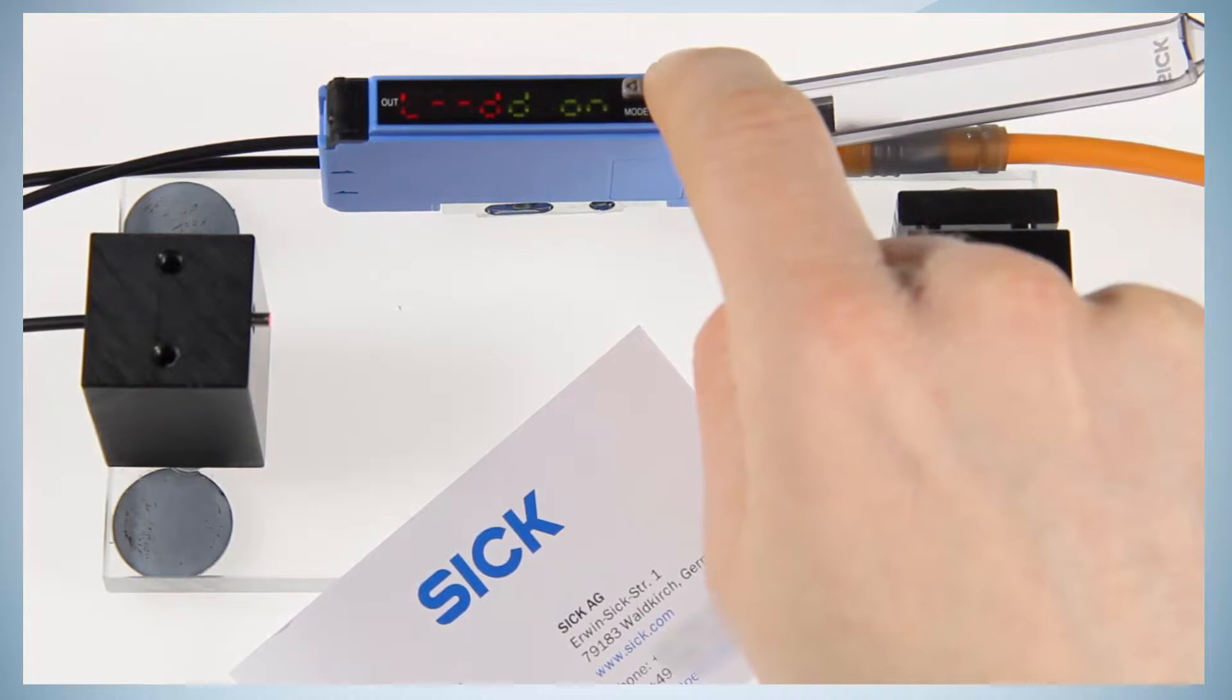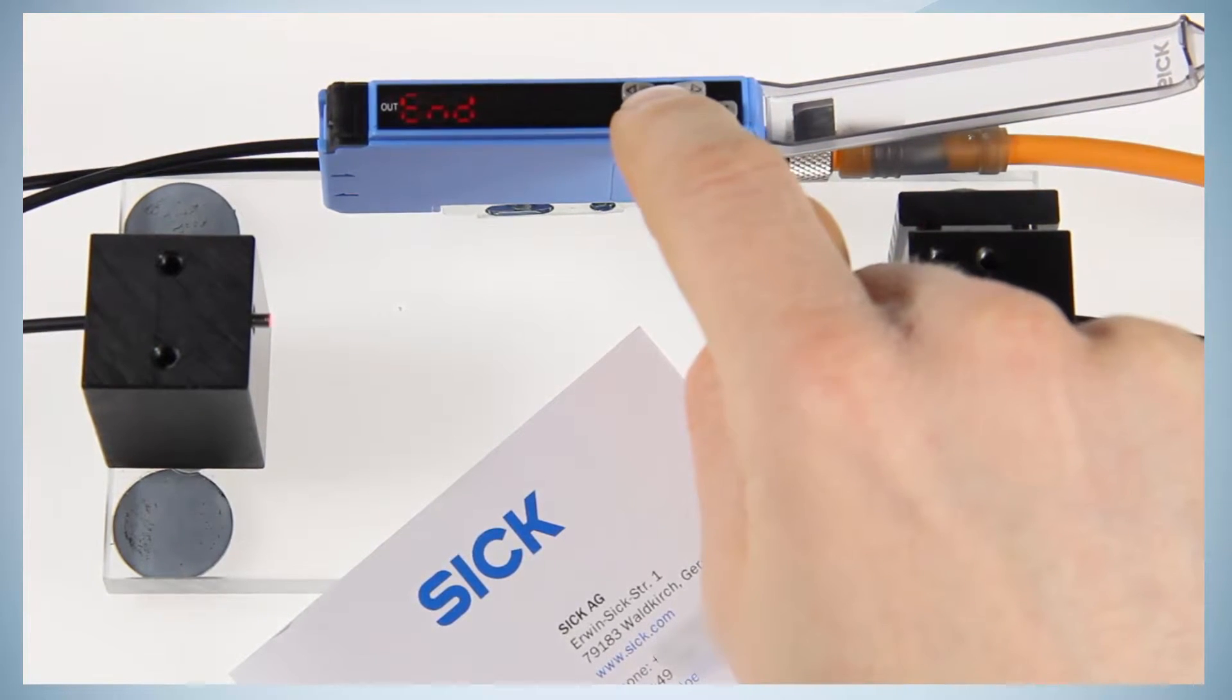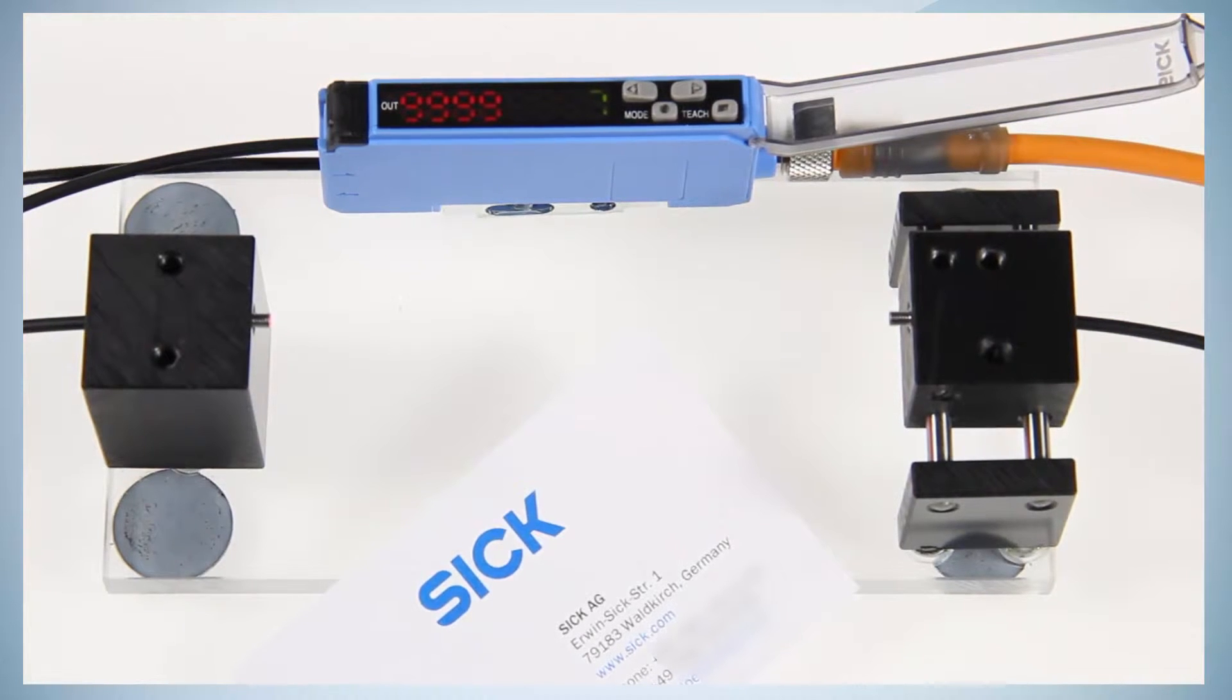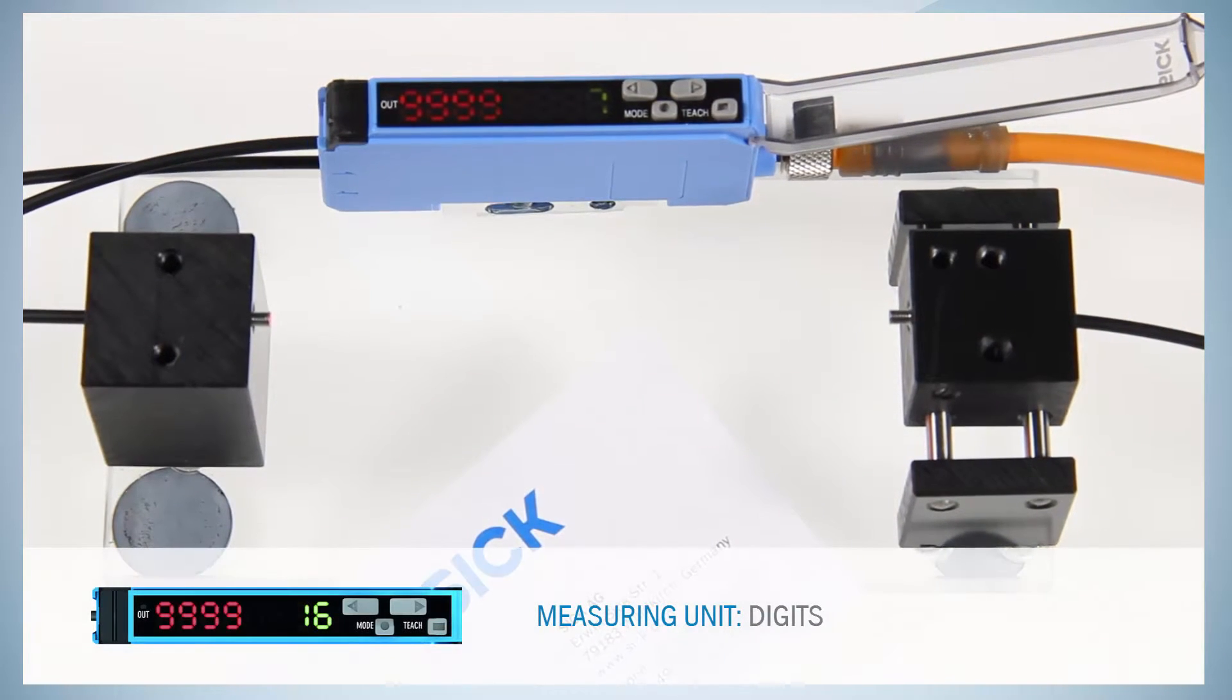Use the plus or minus button to go to the menu item end. Confirm by pushing the mode button to go back to the run mode. The display should now show a value of 9999 digits.